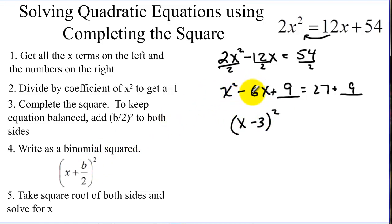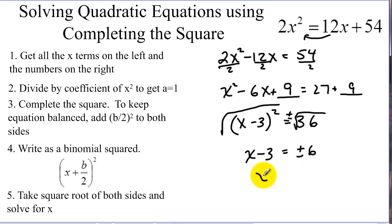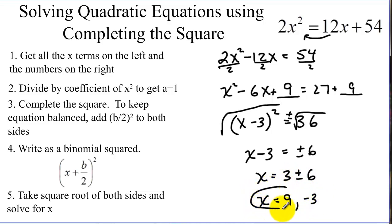What goes in the factor is half of b — we added half of b squared. On the other side, 27 plus 9 is 36. Now this is like the very first problem — we're going to solve by square rooting both sides. The square root of something squared just undoes the square, so we get x minus 3 equals plus or minus 6. Adding 3, we get x equals 3 plus or minus 6. Our answers are 3 plus 6, which is 9, and 3 minus 6, which is negative 3. That's our solution, using the completing the square technique.